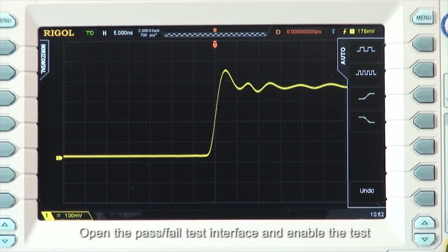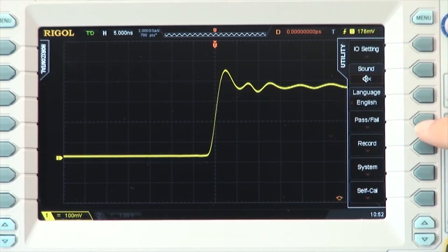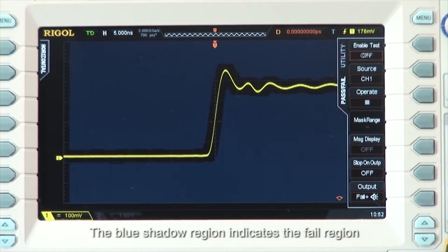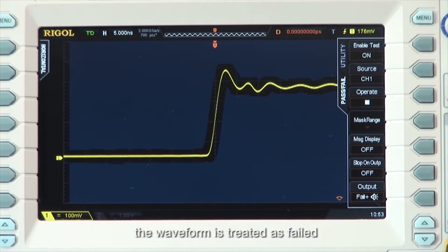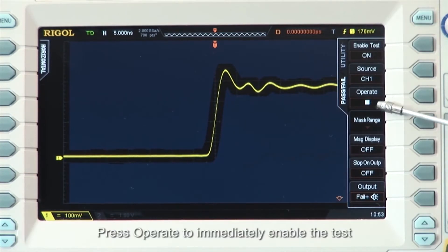Open the pass-fail test interface and enable the test. The blue shadow region indicates the failed region. During the test, if the waveform measured at a certain time passes through the fail region, the waveform is treated as a failure. Press Operate to immediately enable the test.